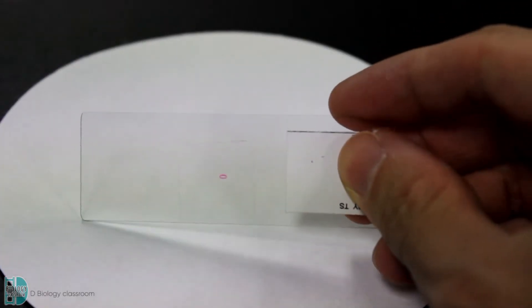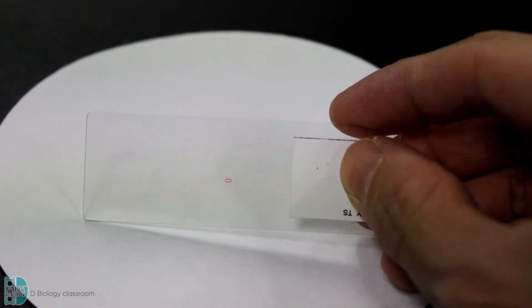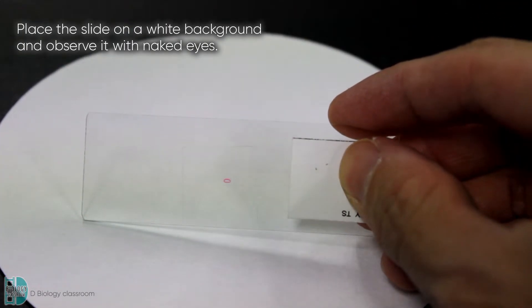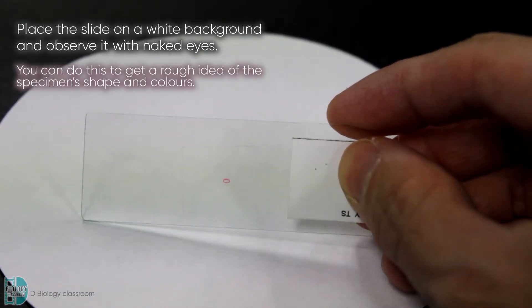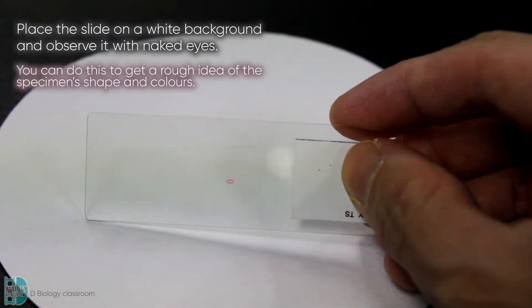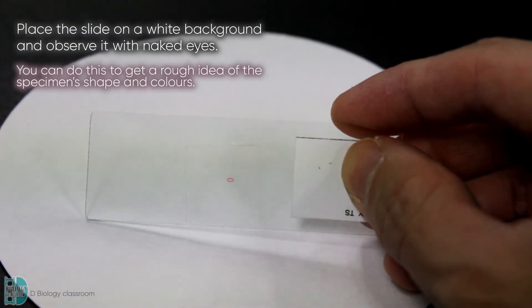Before viewing the slide under the light microscope, it is a good idea to place it on a white background and just use your naked eyes to observe it. I always do this to get a rough idea of what the specimen's shape and colors are, so I know what to expect later. You can also hold the slide against the ceiling light for this purpose.